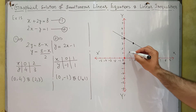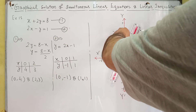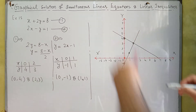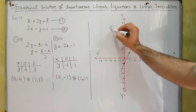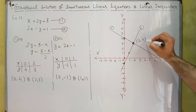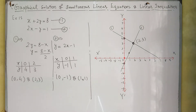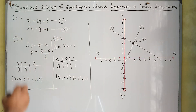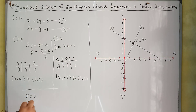Now look at the point of intersection of both lines. This was the graph of the first line and this was the graph of the second line. The point of intersection of both straight lines is our solution. So in this system of equations, X will be equal to 2 and Y will be equal to 3.